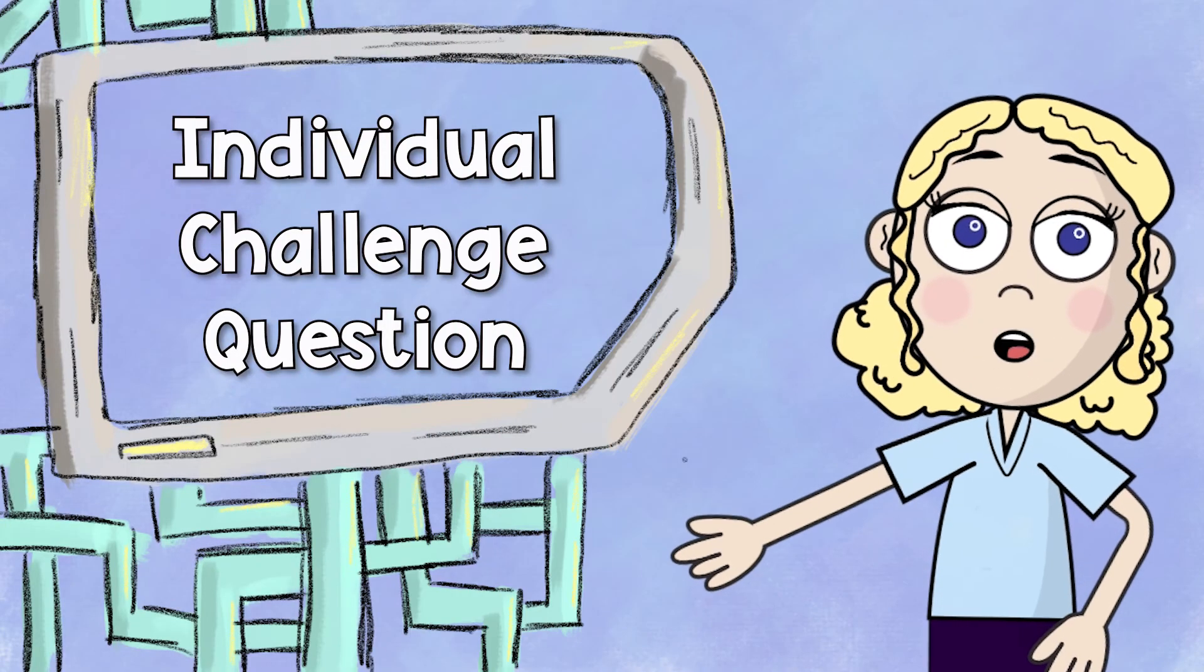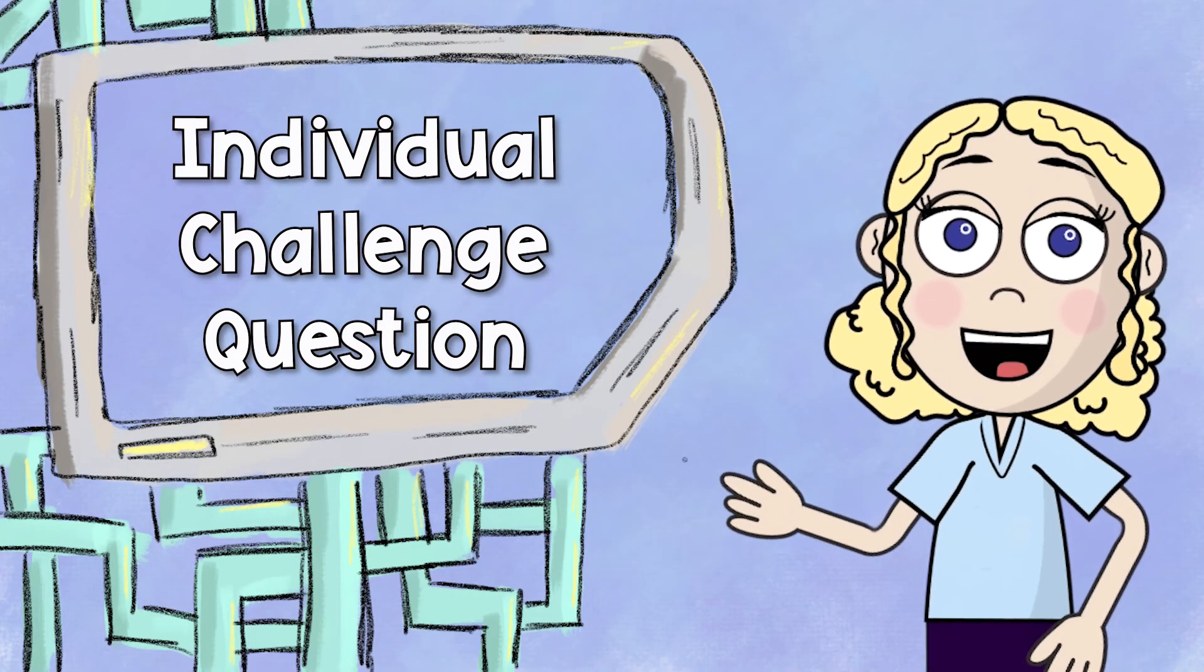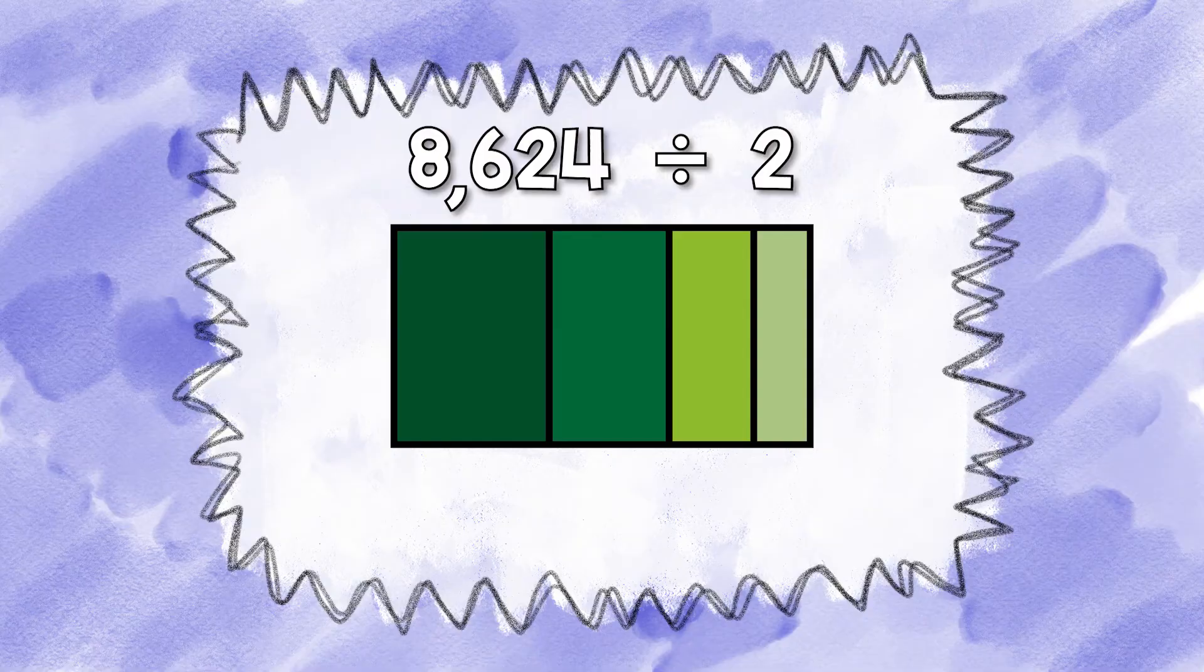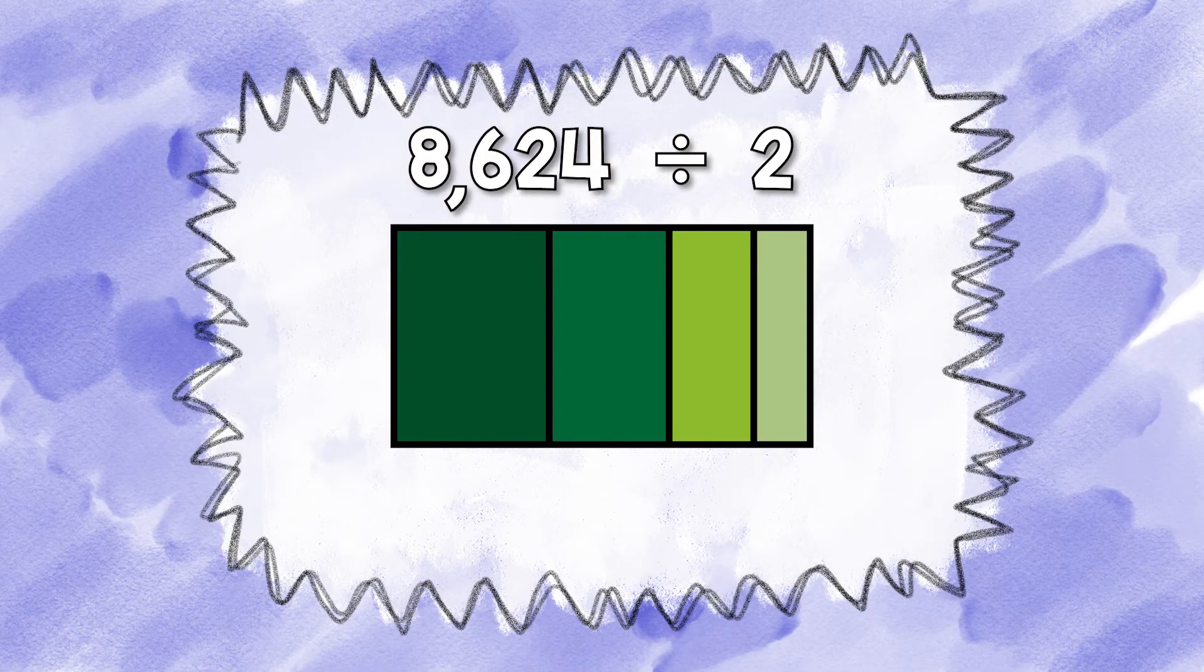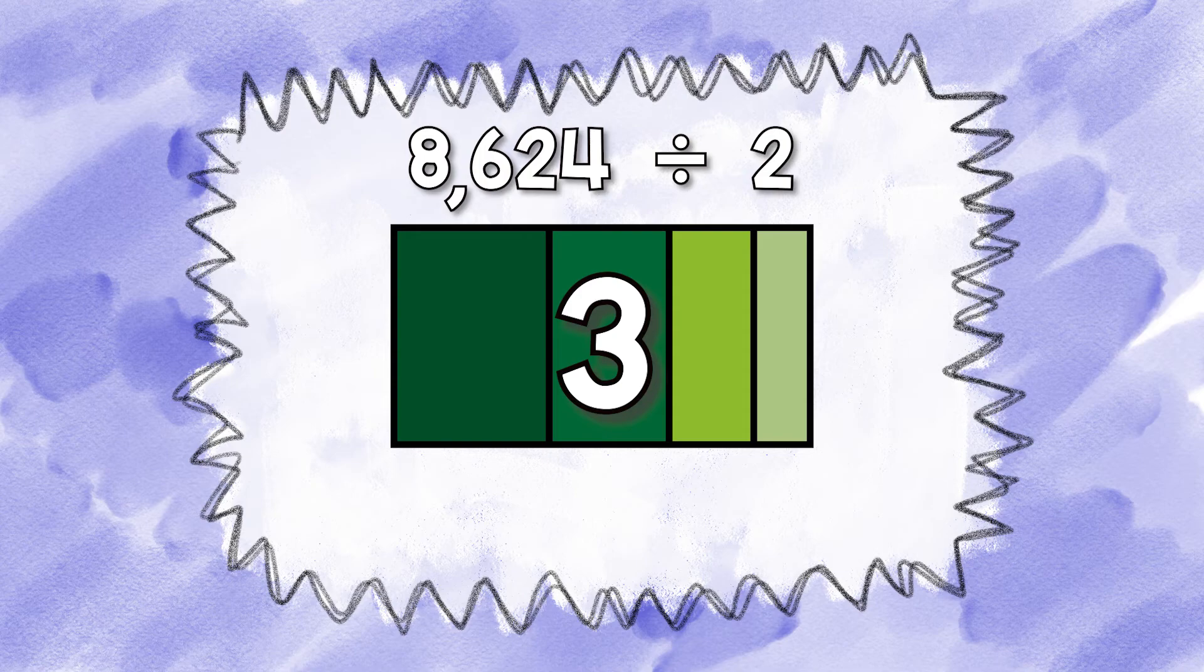Now that we've done a couple together, let's see if you can do this one on your own. 8624 divided by 2. Remember, you can pause this video if you need more time to solve.